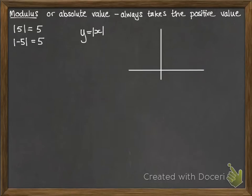Now, if we think about the graph of what this could do to y equals x, if instead we're looking at y equals modulus x, this is what happens.